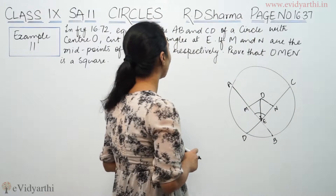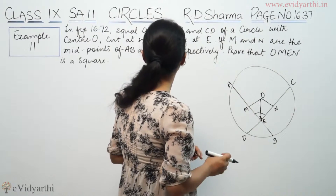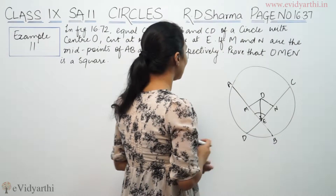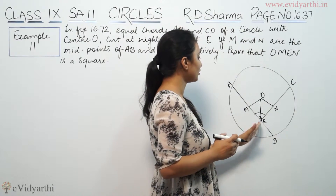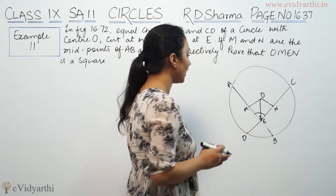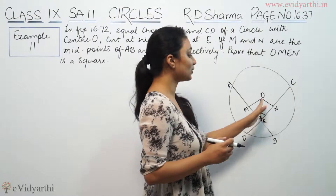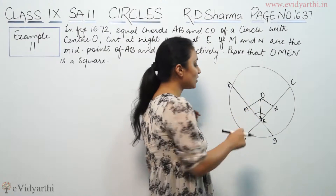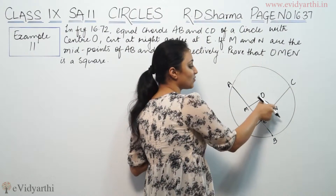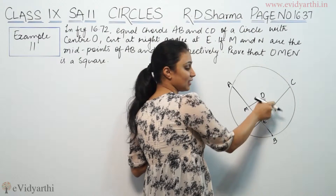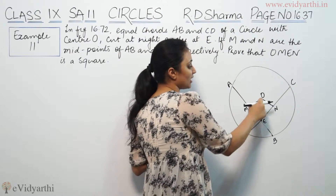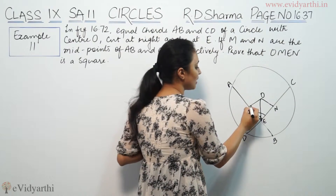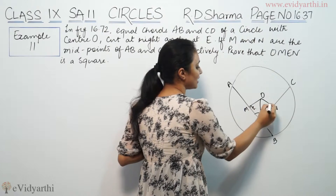So, the chords cut at right angles, meaning this angle is 90 degrees and this is also 90 degrees. Since the chords are equal, they are equally distant from the centre. So this angle is also 90 degrees.